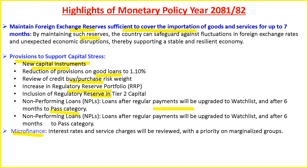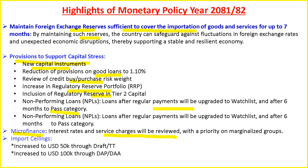Microfinance interest rates and service charges will be reviewed with priority on marginalized groups. Regarding import payment limits, cash payments in US dollars up to $50,000 will be permitted, while payments through draft or TT will be increased to $100,000 through DAP or DA. These are some of the major highlights of monetary policy 2081/82.